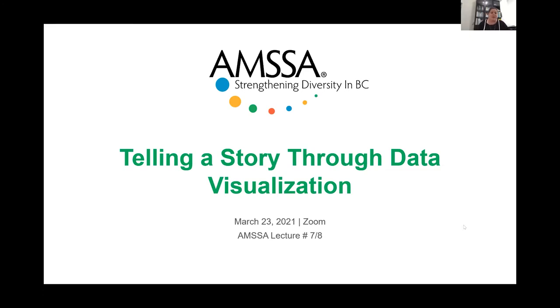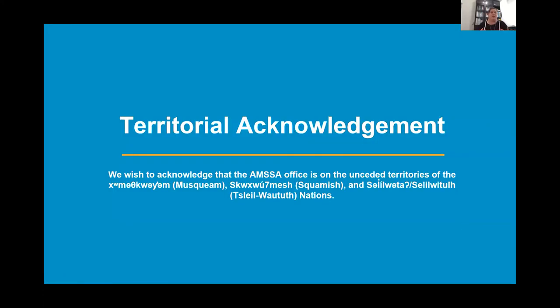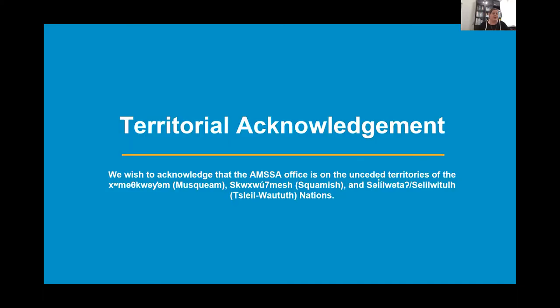Before we get situated and get started with our lecture, I just want to acknowledge and situate the territory upon which we're located. As a provincial umbrella association, AMSA would like to acknowledge that BC is home to 198 First Nations. We would also like to recognize the privilege that we have as settlers on this land. AMSA's operation is located on the unceded traditional territories of the Musqueam, Squamish, and Tsleil-Waututh First Nations. I would also like to acknowledge that I'm joining you today from the unceded territories of the Stolo, Kwantlen, and Katzie First Nations.